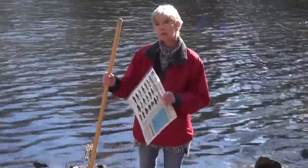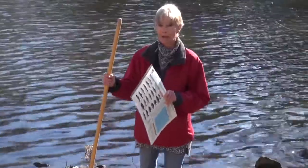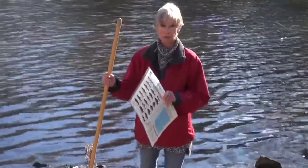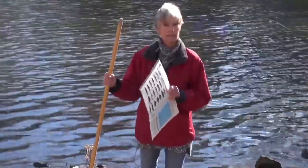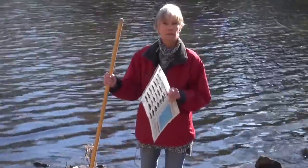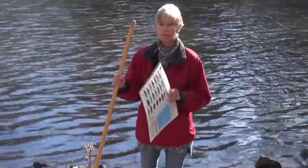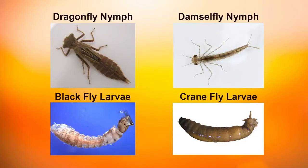The important thing to remember is that these benthic macroinvertebrates are larval or nymph stages of adults that fly out of the stream. For example, we're talking about dragonflies and damselflies and blackflies and craneflies.